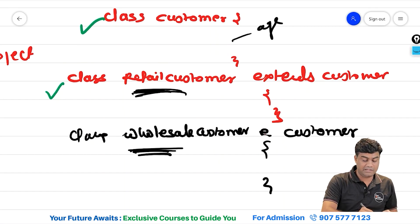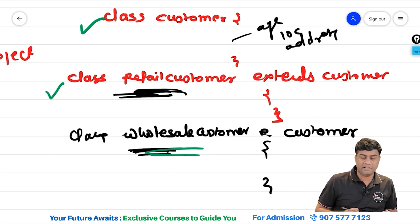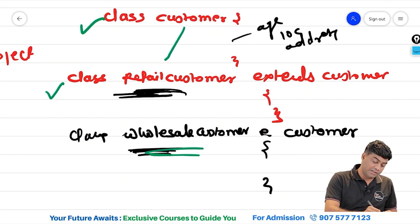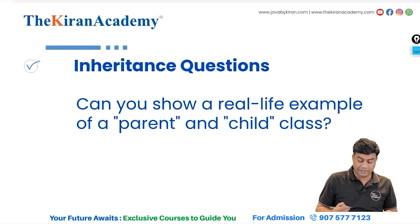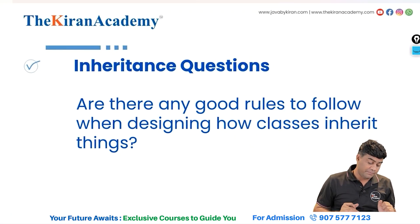Here you can have age, location and address. Whereas, some properties of retail customer are different and wholesale customer are different. But common things will be coming here as well as here. In this way, you need to explain because interviewer might be seeing your thinking ability, your grasping, your understanding, your in-depth knowledge about some concepts.